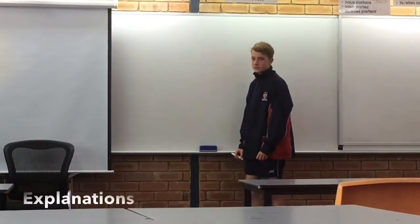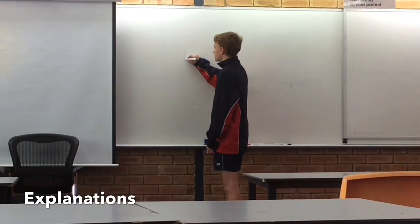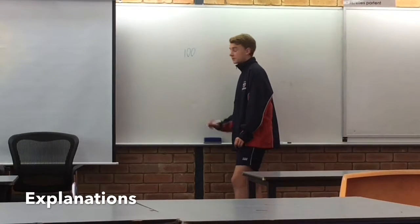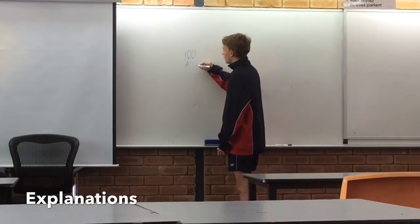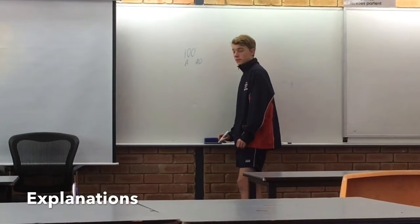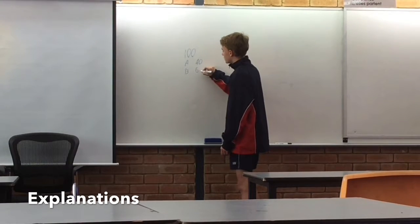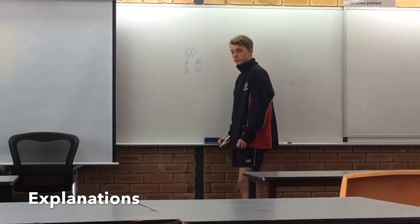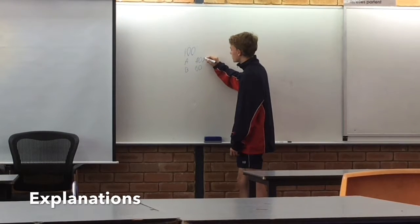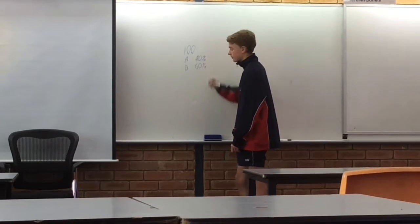For possession, this is the equation. Say two teams play for 100 minutes. Team A had 40 minutes of possession and team B had 60 minutes of possession. This means that team A had 40 percent of possession and team B had 60 percent of possession.